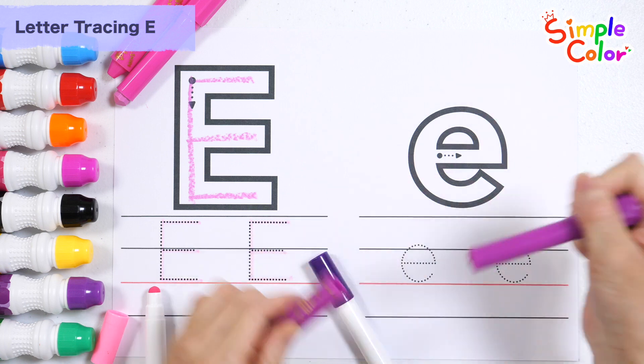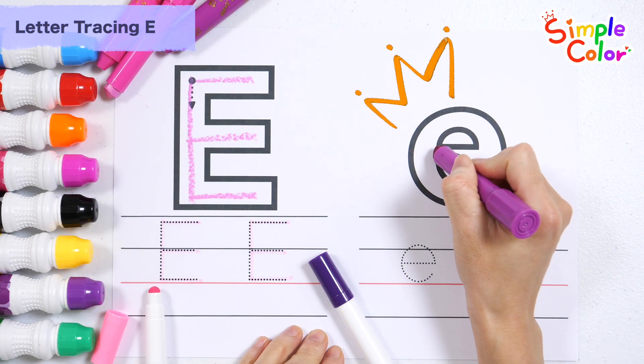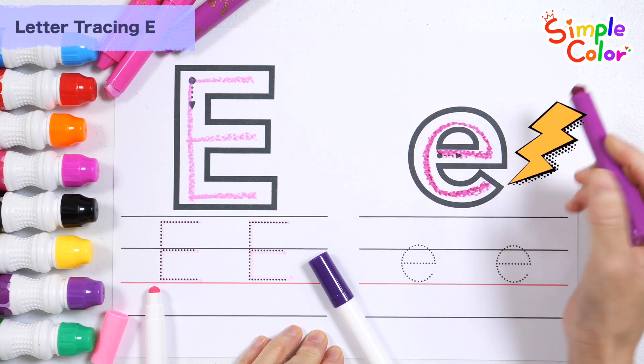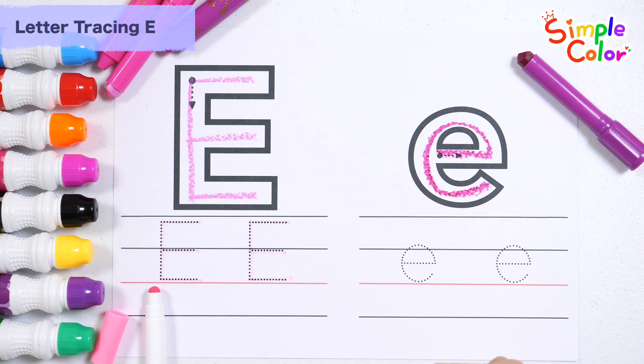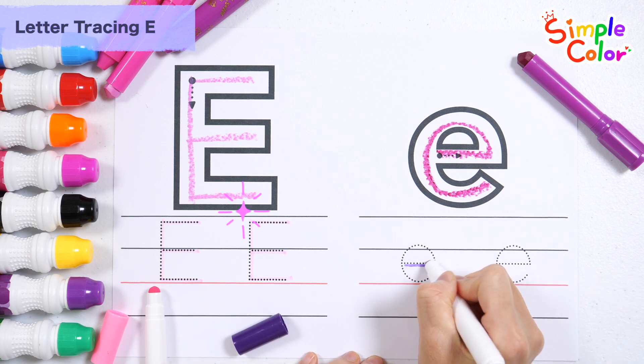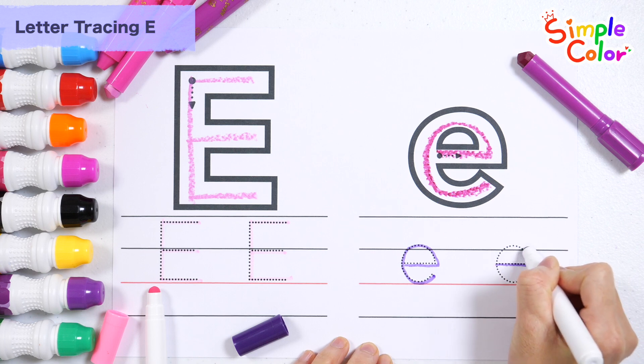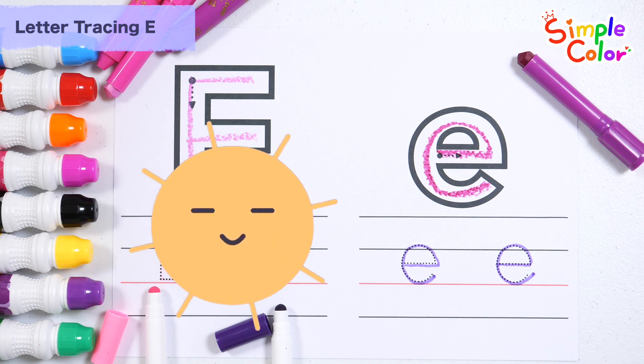Learn how to write the lowercase letter e with purple crayon. Lowercase letter e. Let's practice writing twice with a purple pen. E, lowercase letter e. Good job!